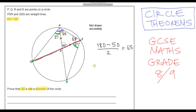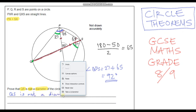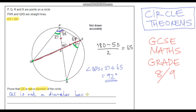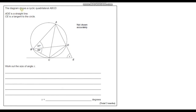Now we can calculate the angle QPS. It's going to be the sum of 27 degrees plus 65 degrees, which gives us 92 degrees. This is important because in order for QS to be a diameter, this angle had to be 90 degrees. Since angle QPS is 92 degrees and not 90 degrees, QS is not a diameter.